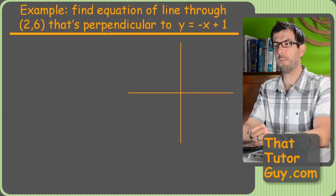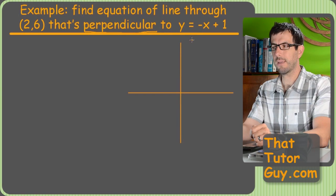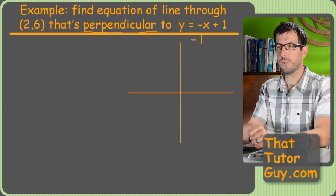All right, this one's pretty much the same problem, only this time we're doing perpendicular. So, the slope of the original problem here is negative one. So, what does that mean the slope of our line is going to be? That's going to be the negative reciprocal.